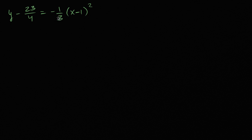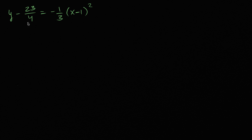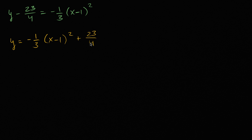This right here is an equation for a parabola. The goal of this video is to explore an alternate method for finding the focus and directrix of this parabola from the equation. The first thing I like to do is solve explicitly for y — my brain just processes things better that way. So let's add 23 over 4 to both sides, and we'll get y is equal to negative 1/3 times x minus 1 squared plus 23 over 4.